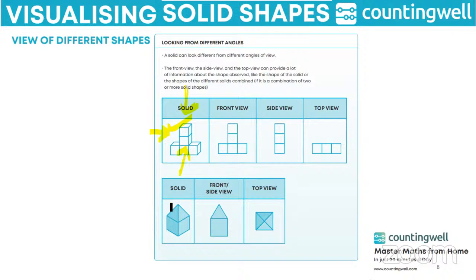Let us see one more example. If the solid shape given is this, then if you view from the front side it will look like this. But if you look from the top, then it will look like this.